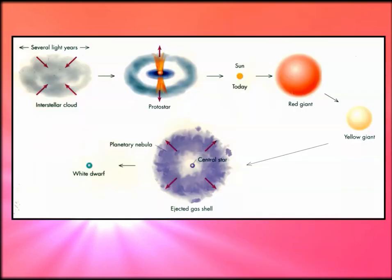Here's a visual representation of the life cycle of a low mass star — those that are three times the size of our Sun or smaller. You start in the interstellar cloud called the nebula, where hydrogen starts to coalesce and you get protostars, like the Pillars of Creation in the Eagle Nebula.